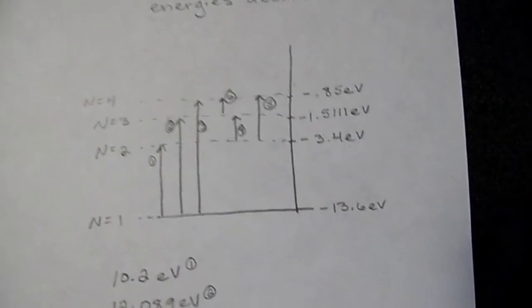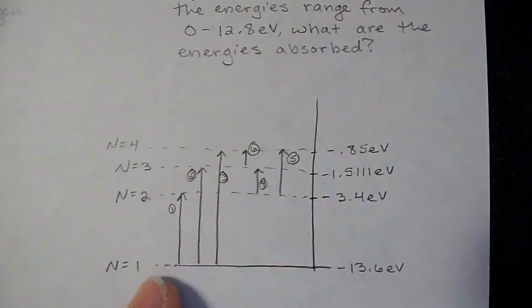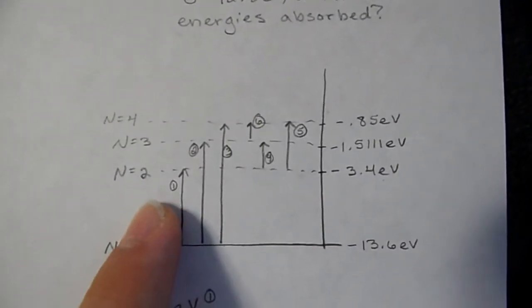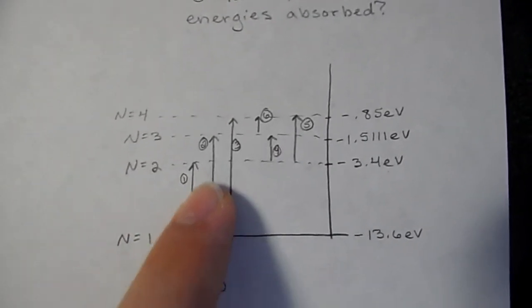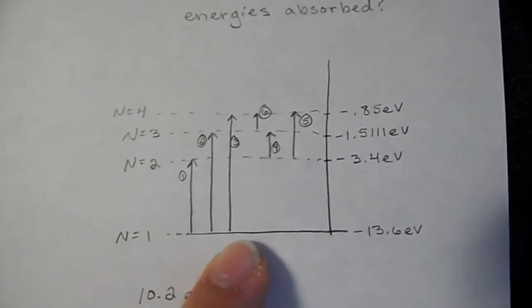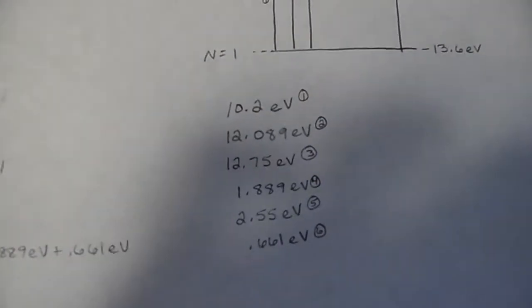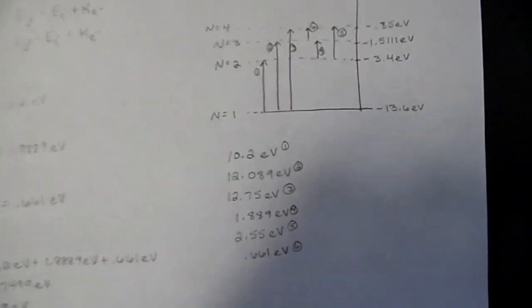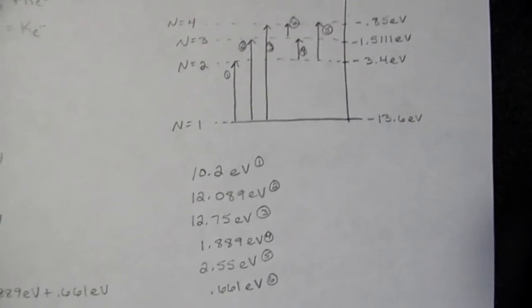We have these energy levels right here. We can just draw the arrows backwards the other way, and then use the same principle, final minus initial, to give the kinetic energy. Start at negative 13.6, go up to negative 3.4. Carry the same procedure out across all six arrows, and you'll get these six values. I've labeled the energy levels along with the arrows.